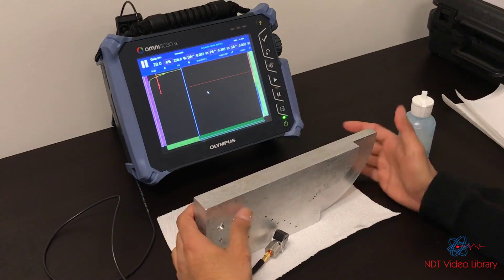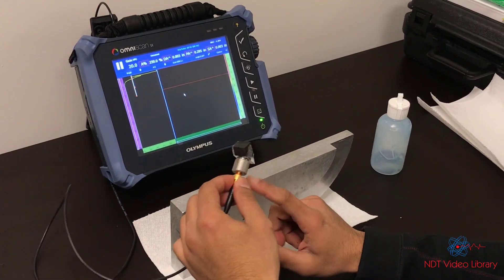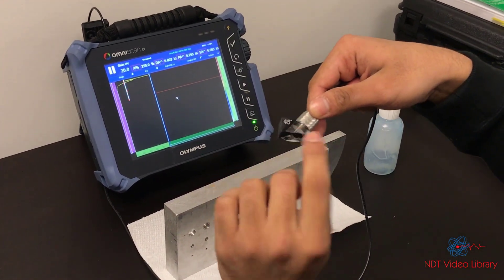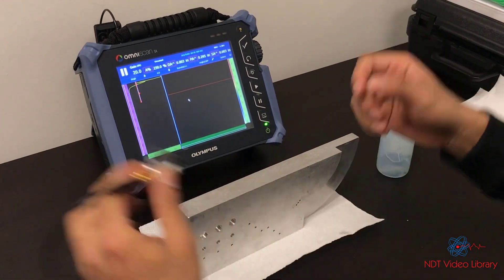We're going to learn how to do angle beam calibration for conventional UT using a 45 degree shear wave. It says 45 degree wedge and the transducer is 2.25 MHz.